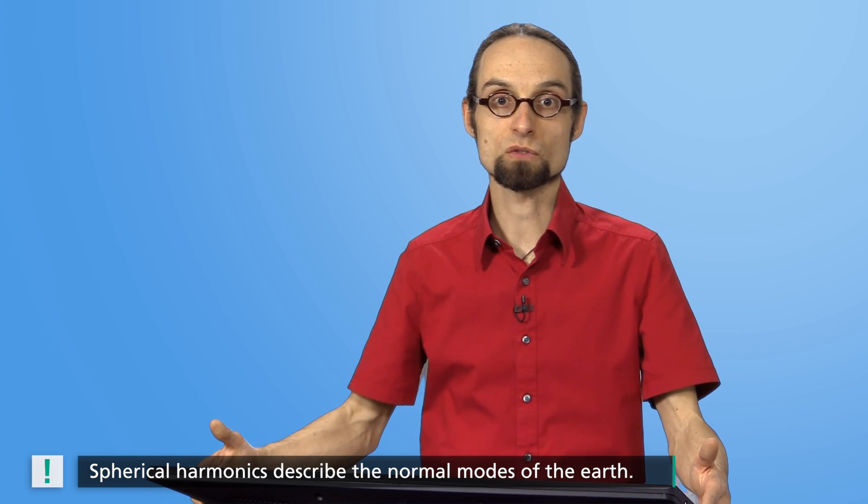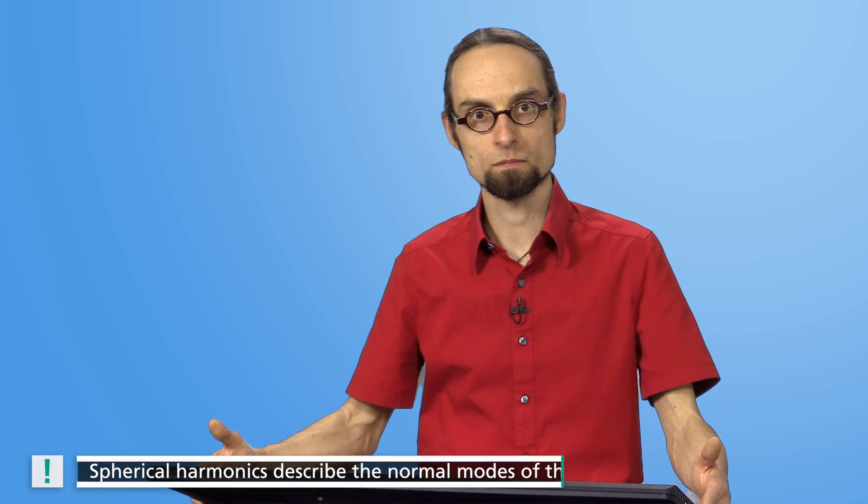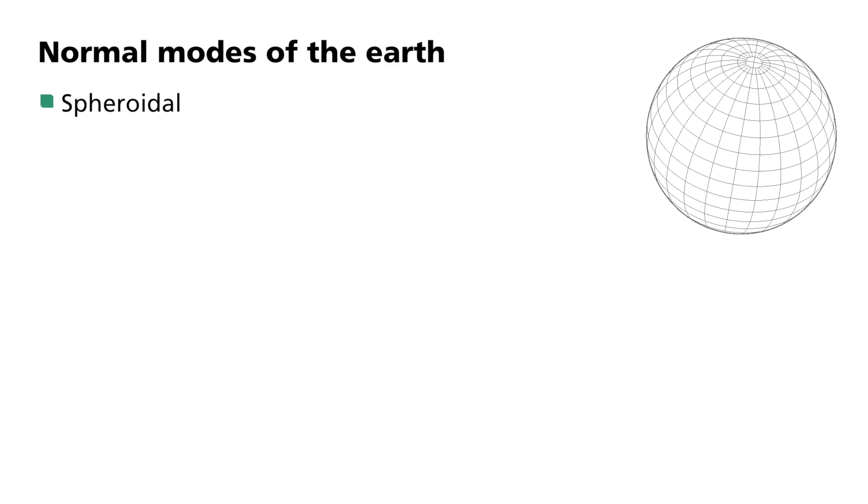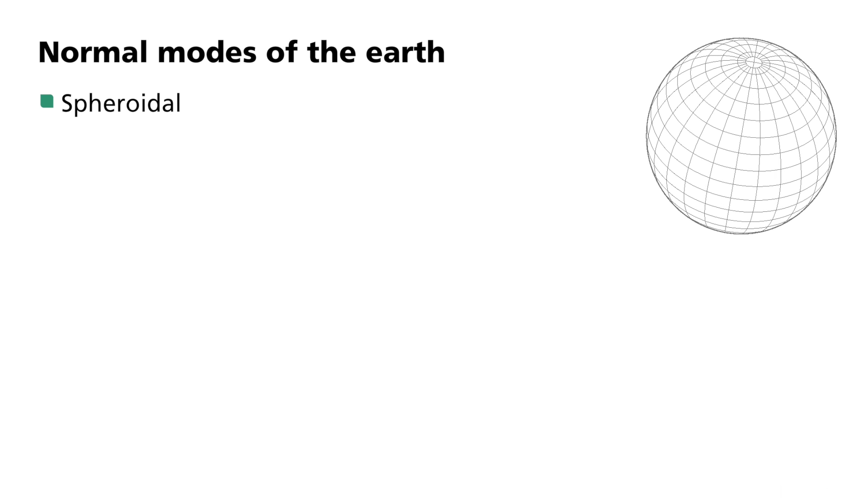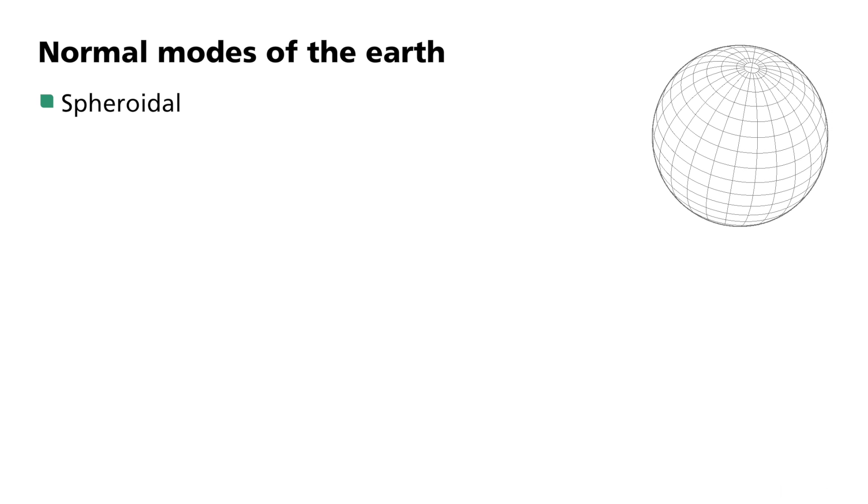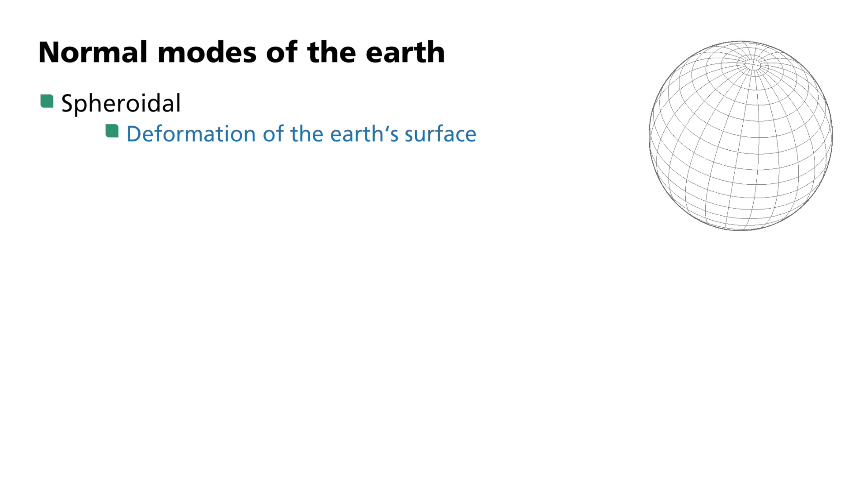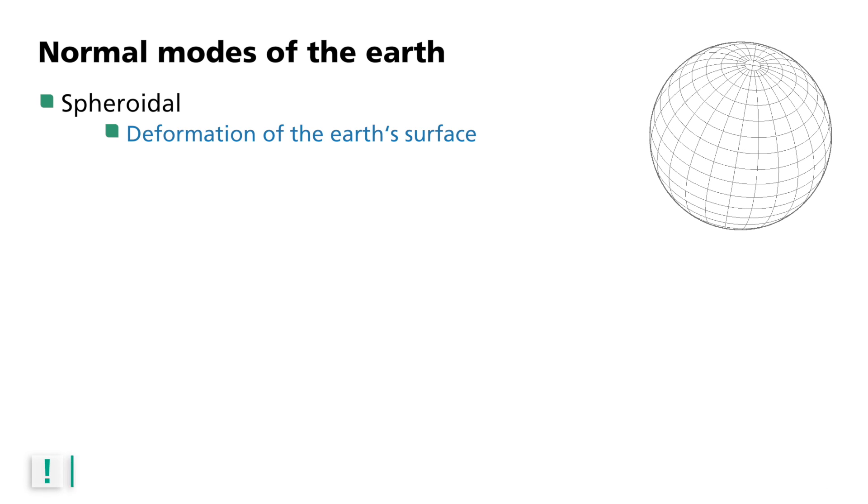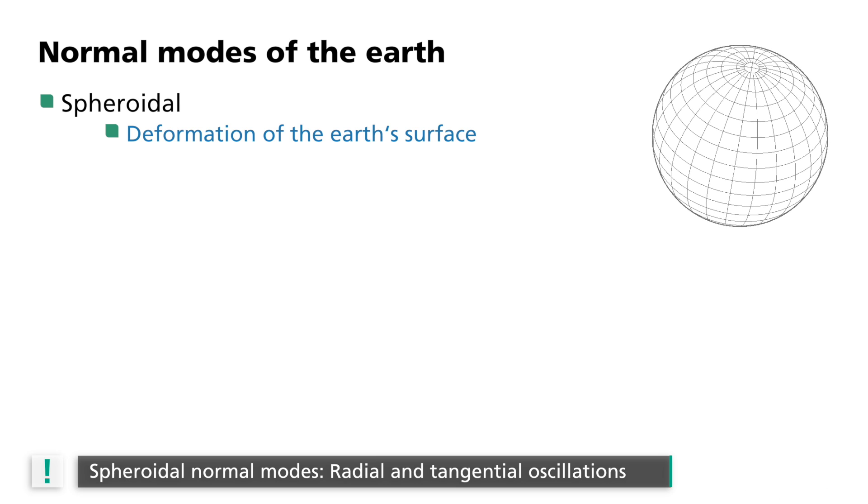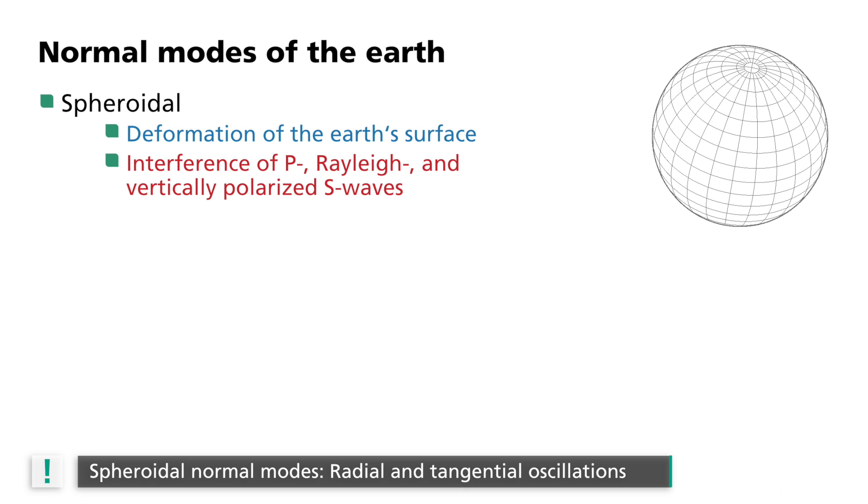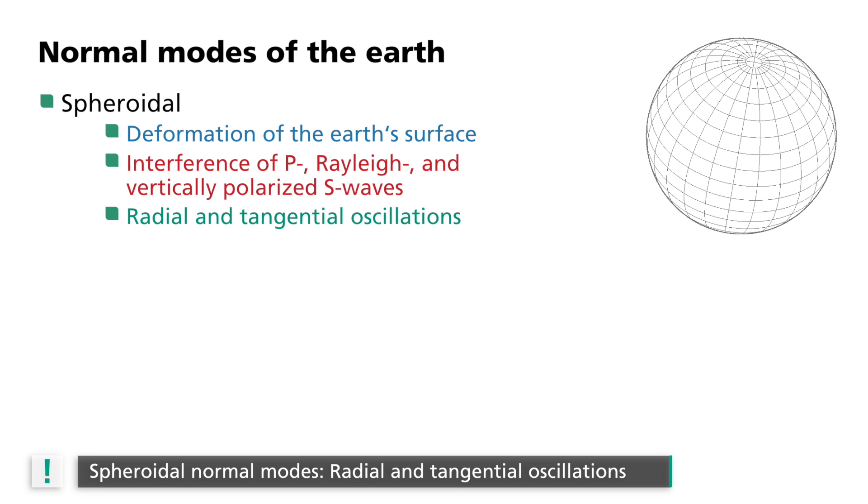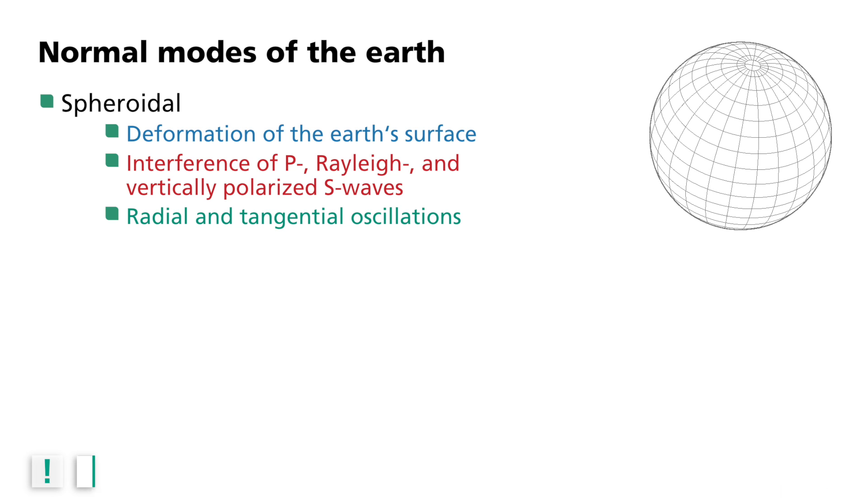They are subdivided into spheroidal and toroidal modes. Here is an example of a spheroidal normal mode. The breathing mode, in which the Earth behaves like a balloon that is periodically inflated and deflated again. Expansions and contractions deform the Earth's surface. Spheroidal normal modes are standing waves, which are composed of interfering P- and Rayleigh waves, as well as vertically polarized S-waves. Just like them, they oscillate radially and tangentially to the Earth's body.